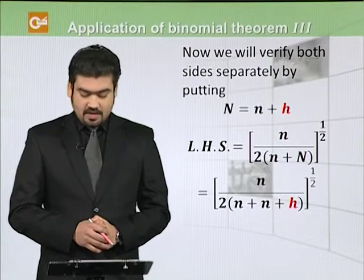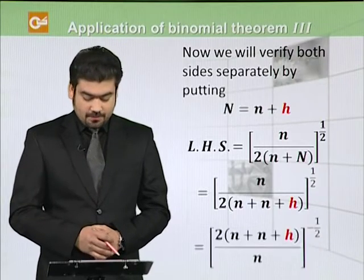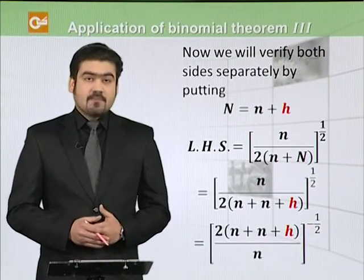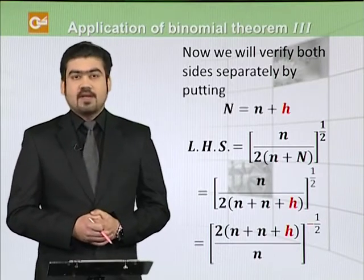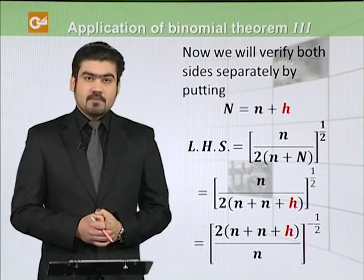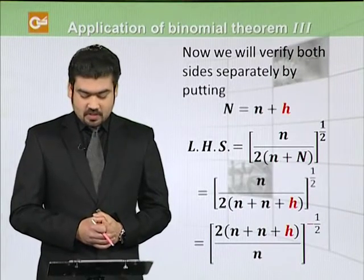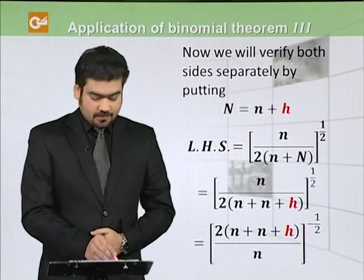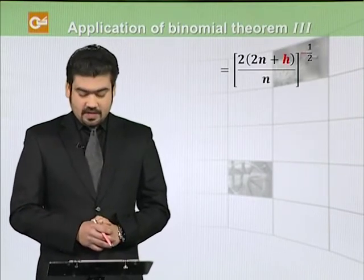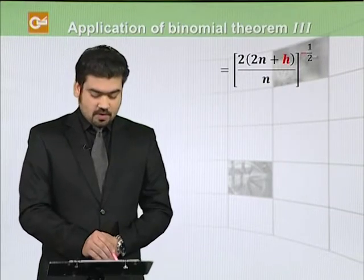So this will be equal to n divided by 2, multiplied by (2n plus h) whole raised to power 1 over 2. Now hamne iska reciprocal lenge — jo pehle plus 1 over 2 thi, ab minus 1 over 2 ho jayegi. So you have 2 multiplied by (n plus n plus h) whole divided by n, raised to power minus 1 over 2. After simplifying: 2 multiplied by (2n plus h) over n, raised to power 1 over 2.